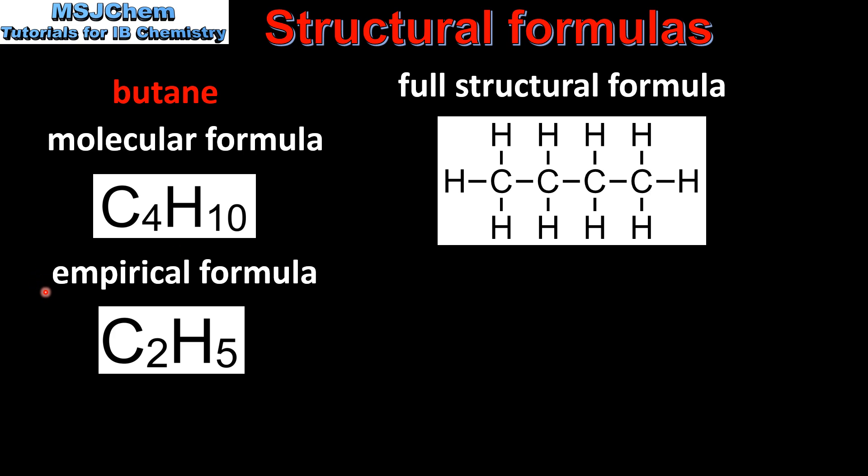Next we have the empirical formula. The empirical formula for butane is C2H5. This tells you the lowest whole number ratio of atoms in a compound.